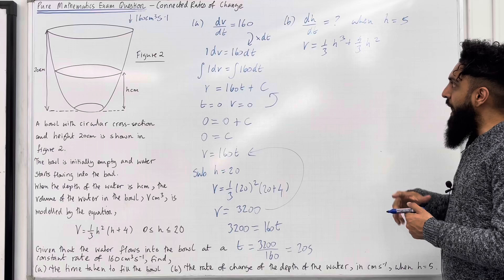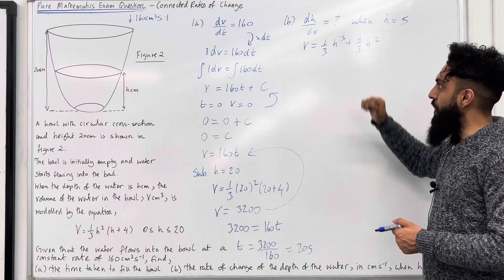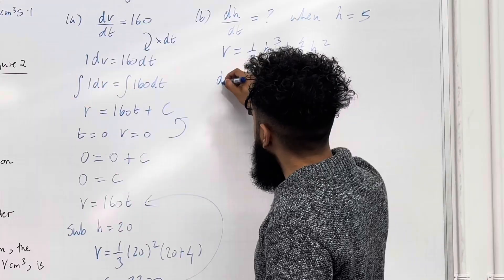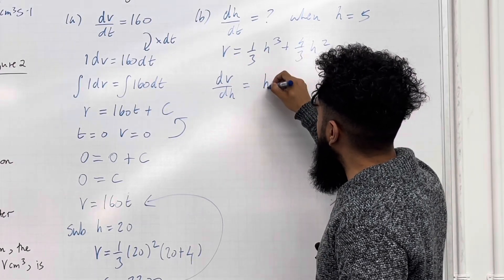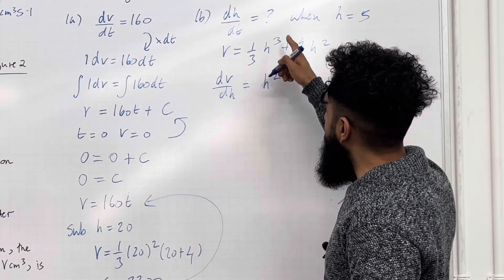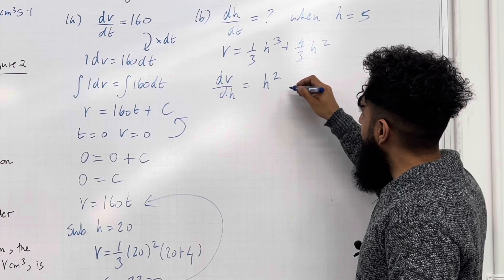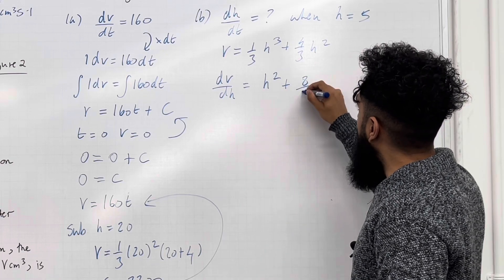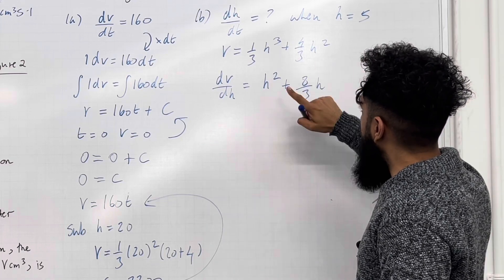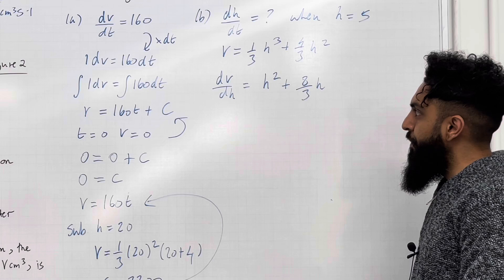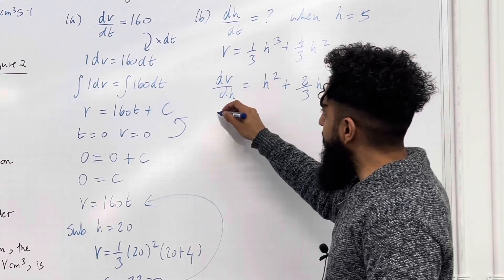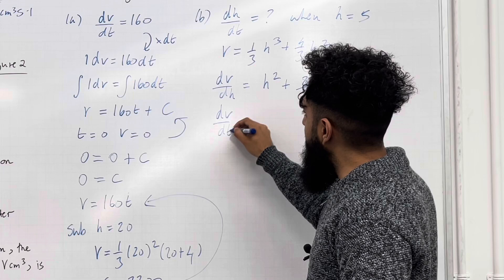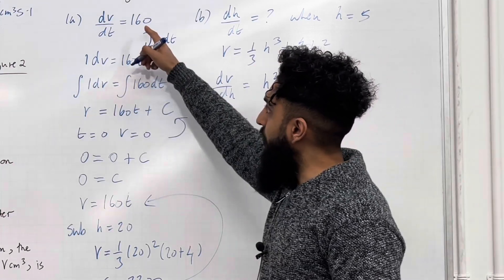So I can work out my first differential by differentiating v with respect to h. dv over dh will equal h². Bring down the power, subtract 1 from the power. The second term differentiates to 8/3 h. Bring down the power, subtract 1 from the power. So, that is my dv over dh. I also know that dv over dt, my second differential is 160.